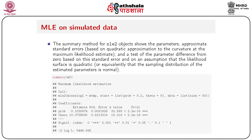The `summary` method for `mle2` objects shows the parameters, approximate standard errors, and a test of parameter difference from zero based on the assumption that the likelihood surface is quadratic — equivalently, that the sampling distribution of the estimated parameter is normal. Running `summary(m0)` shows estimates for prob and theta, their standard errors, z-values, and p-values (all significant), plus the minus-2 log-likelihood.